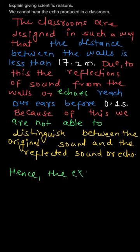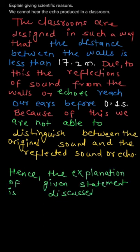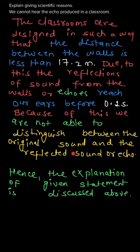So the explanation of the given statement is: in a classroom, the echo is not produced because the classroom is designed in such a way that we cannot distinguish the original and reflected sound. That is the explanation for the given statement. Thank you.